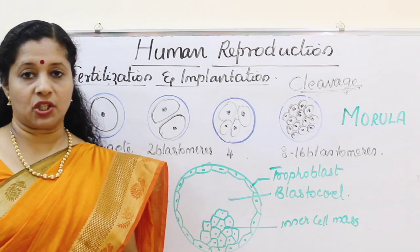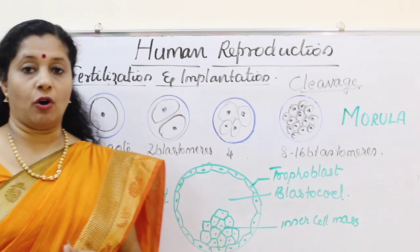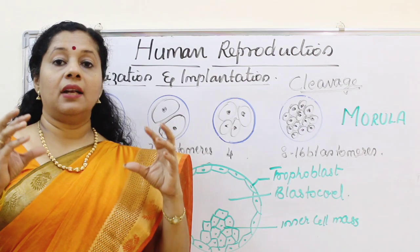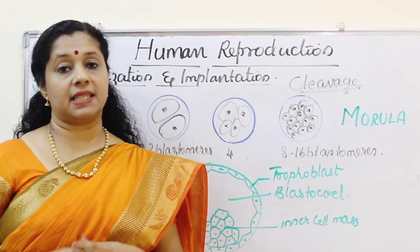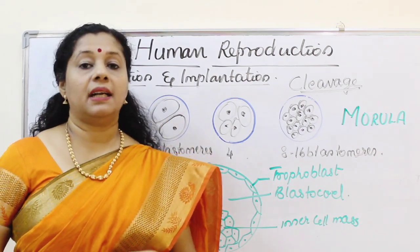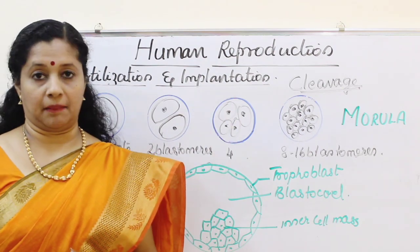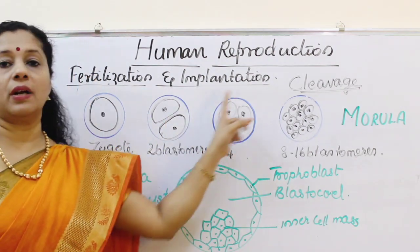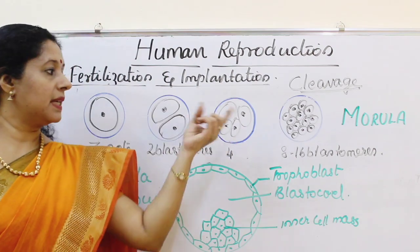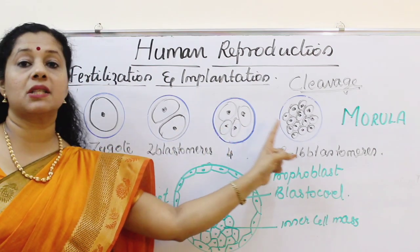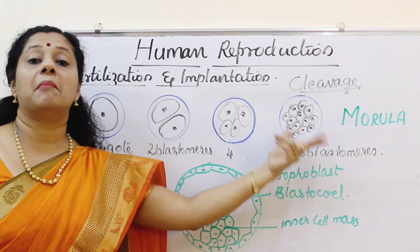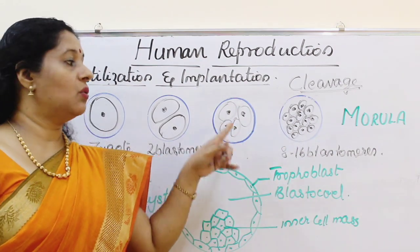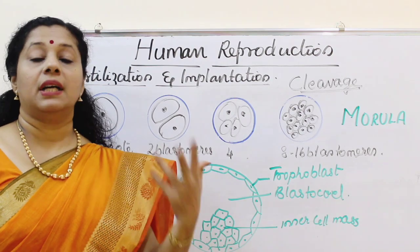During normal mitosis, once daughter cells are formed they undergo interphase where growth occurs before the next division. But here there is no cell growth happening. You can see in these pictures that the outermost layer — the zona pellucida — remains the same, whereas the cells inside become smaller and smaller as their number increases. Also, the nuclear-to-cytoplasmic ratio increases.